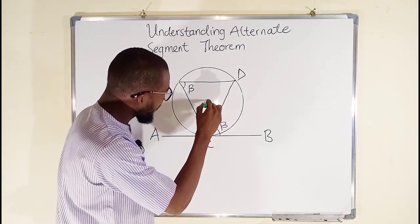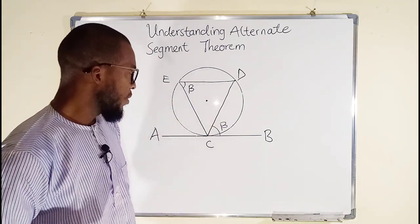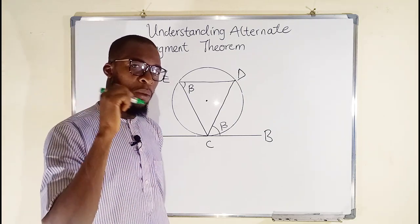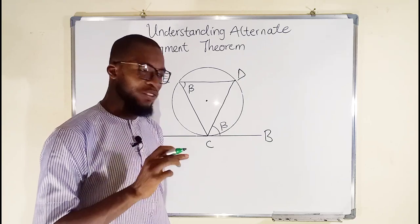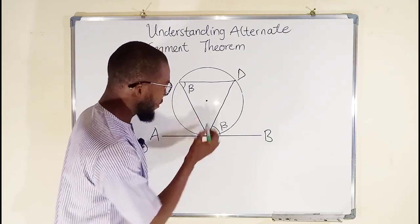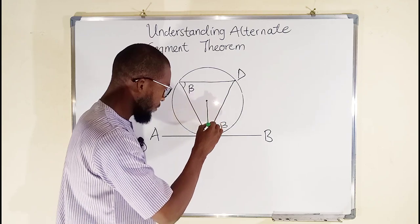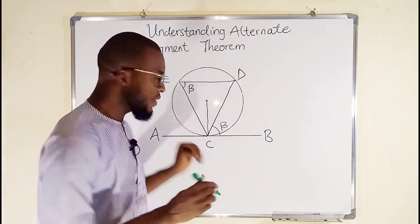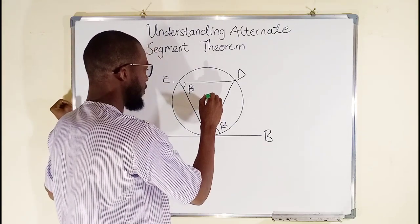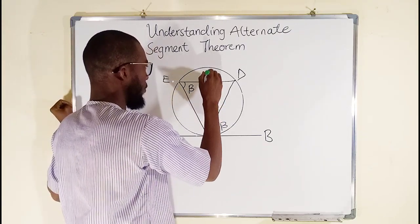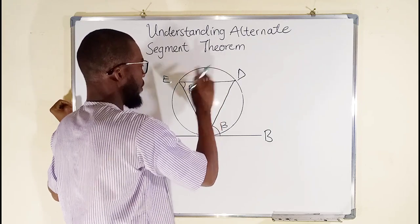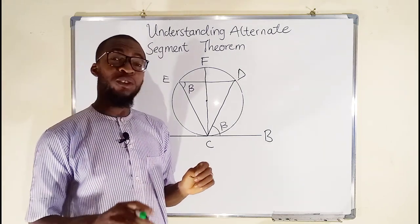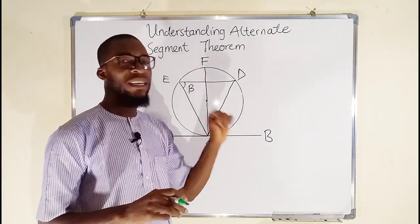Let's assume this is the center of the circle. We want to construct a radius that will touch that point of contact between the circumference and the tangent, which is point C. If we extend the radius to the top, it becomes a diameter — so let me extend it to the top. Let me call this point F. Now we are going to connect F and D together.